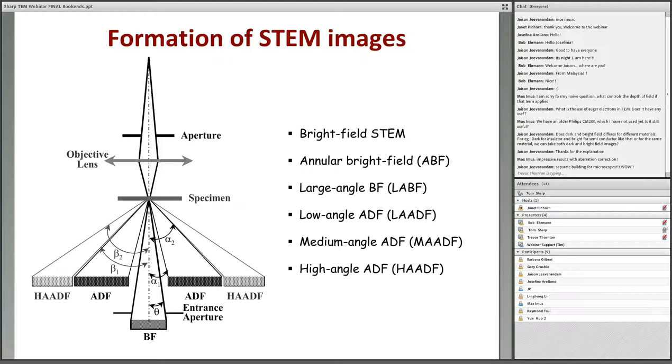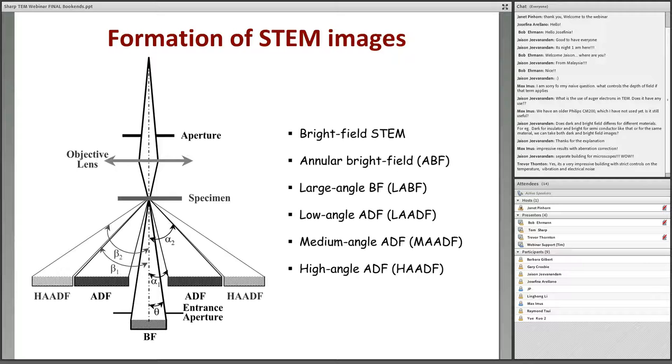I should explain what STEM is. In STEM, we use a finely focused probe and we scan through the sample and we collect a diffraction pattern. We project that diffraction pattern onto a set of detectors, and the detectors allow us to create a bright field image or a dark field image as we scan. Similar to an SEM, we're scanning across the material, collecting a diffraction pattern from each pixel. Our series of detectors is shown here. If we just take the central intensity, that's a bright field image. If we use an annular detector out here, we can do annular bright field or low angle dark field. Or we can use a detector way out here and collect electrons that are scattered at a high angle.